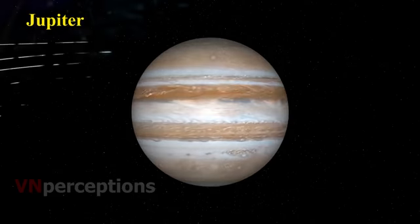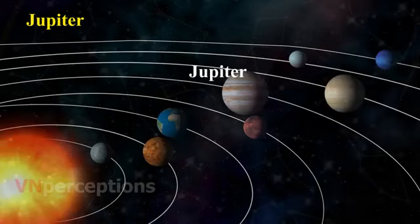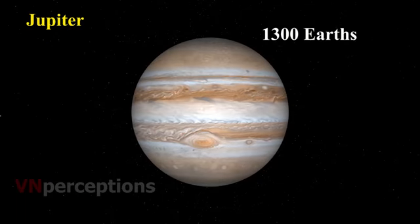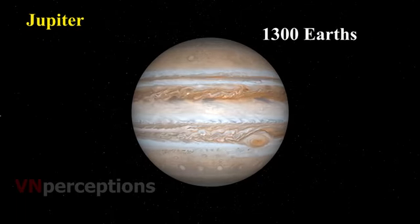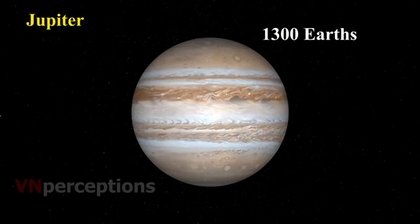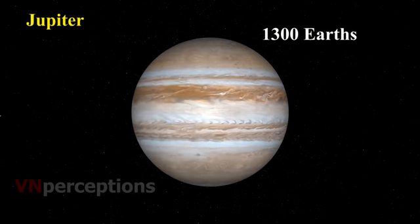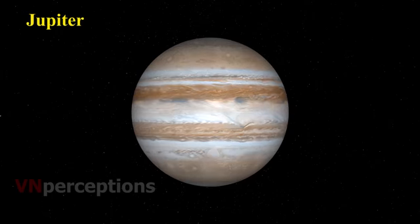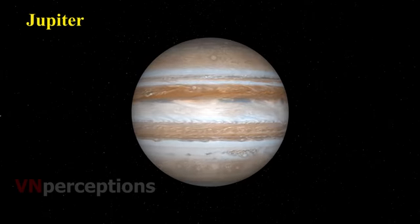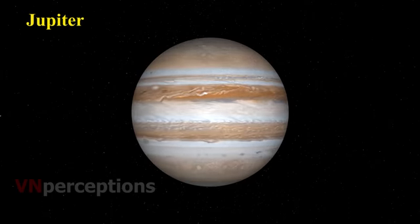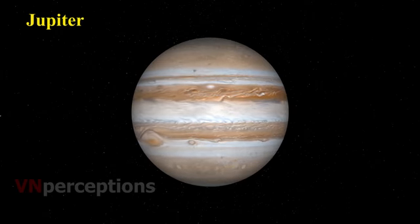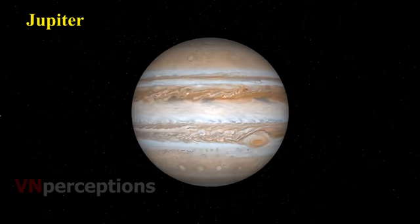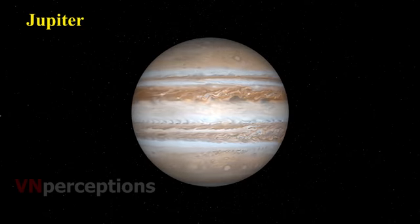Then comes Jupiter. It is the fifth planet from the sun and the largest in the solar system. It is so large that about 1300 Earths can be placed inside this giant planet. However, the mass of Jupiter is about 318 times that of our Earth. It rotates very rapidly on its axis. Jupiter has a large number of satellites and also has faint rings around it.